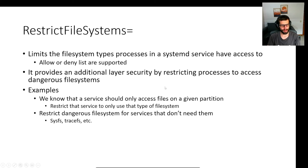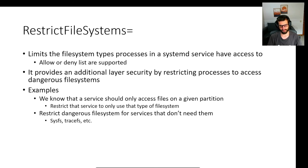The second property we implemented is also security-related: RestrictFileSystems. This restricts the types of file systems that processes are able to access, and again supports an allow or deny list. This provides an additional security layer — for example, if a service should only access files on a given partition, we can restrict it to that partition's file system type. Some examples of dangerous file systems are CFS, BPF FS, and so on.